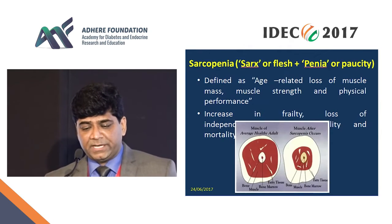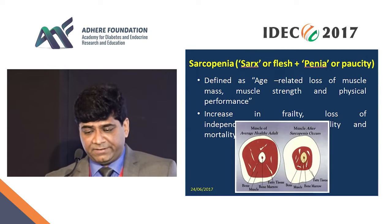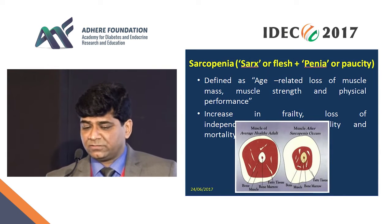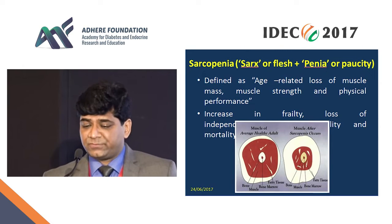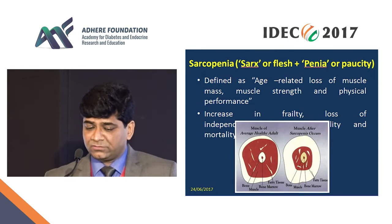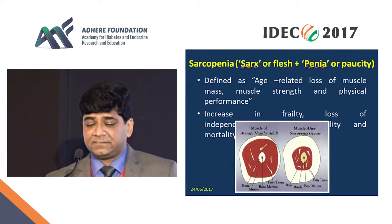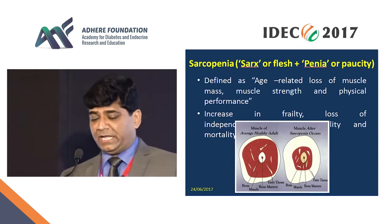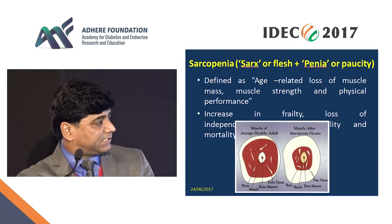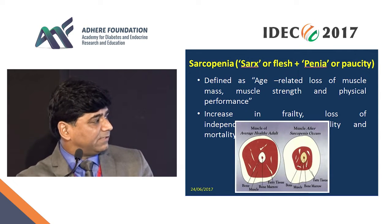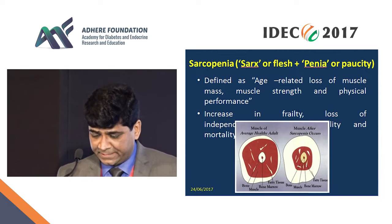Sarcopenia, which is defined as age-related loss of muscle mass, muscle strength, and physical performance, leads to increased frailty, loss of independence, physical disability, and mortality. After age 30, muscle mass starts declining at almost 3% per year, accelerating further after age 60. At the same time, the increase in body fat also occurs as muscle mass goes down.